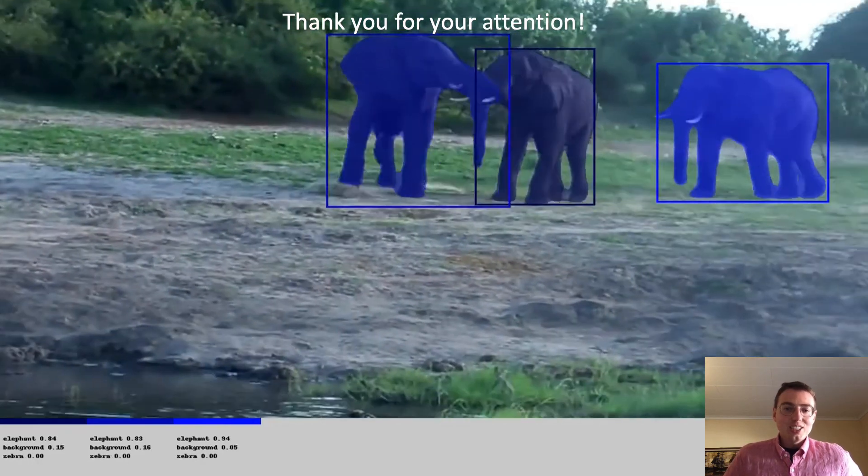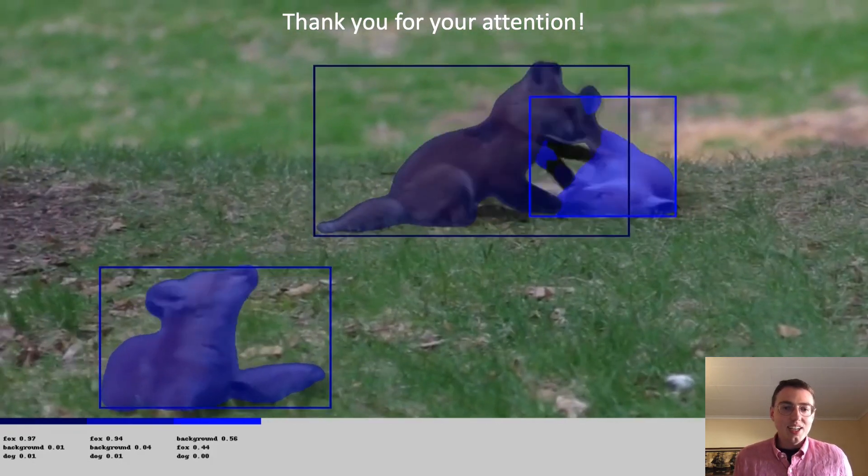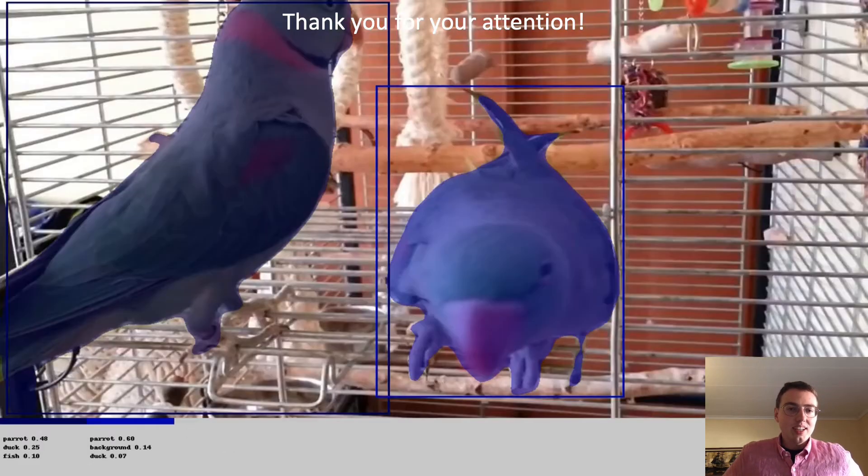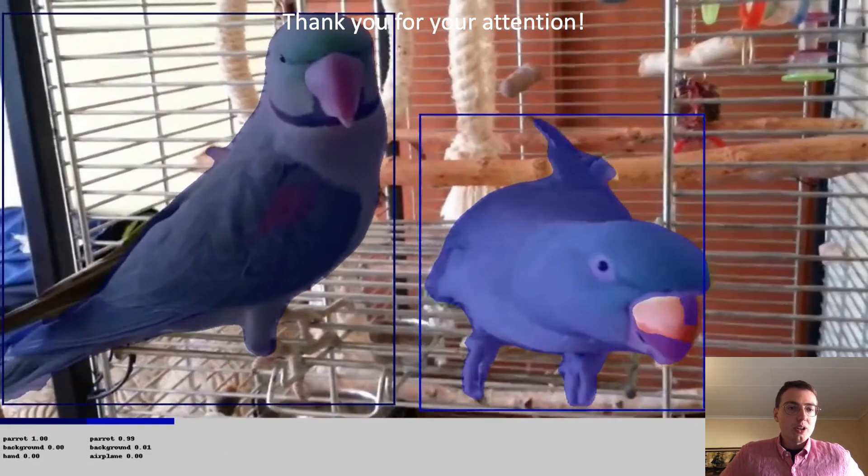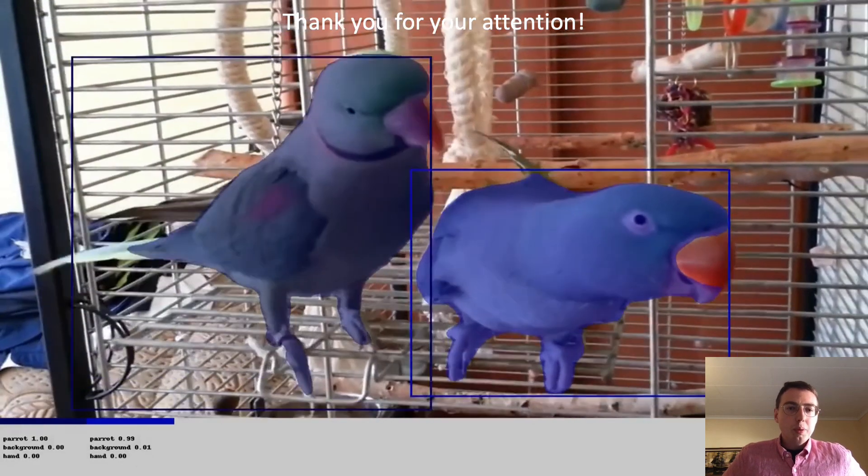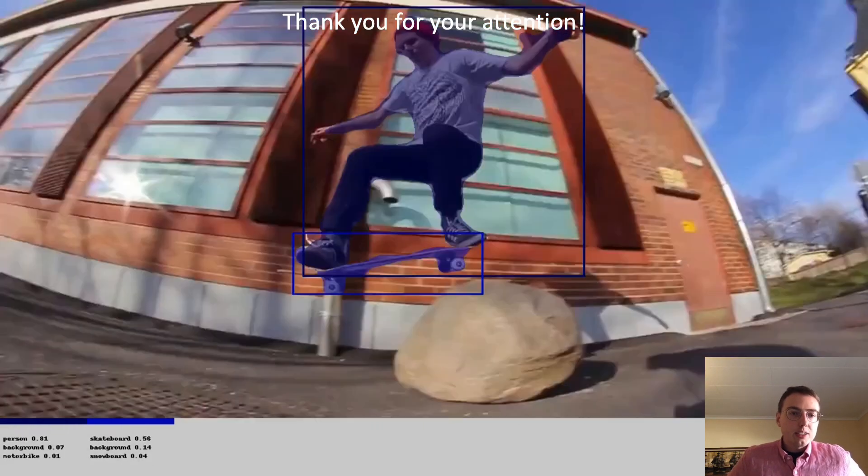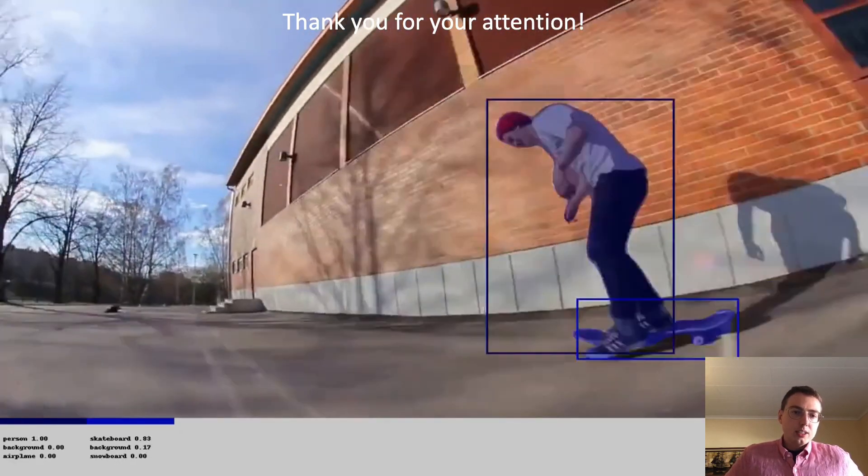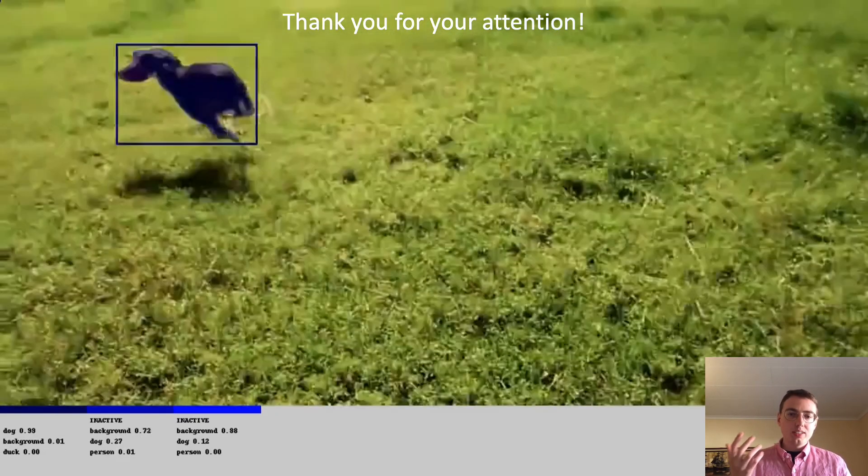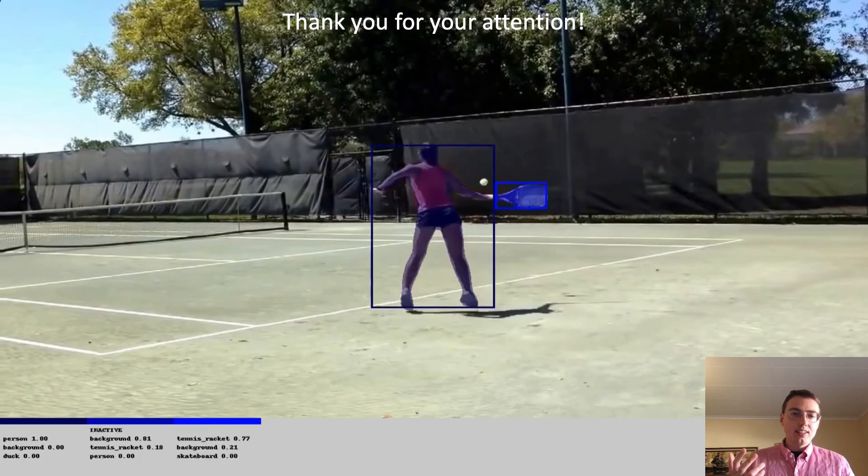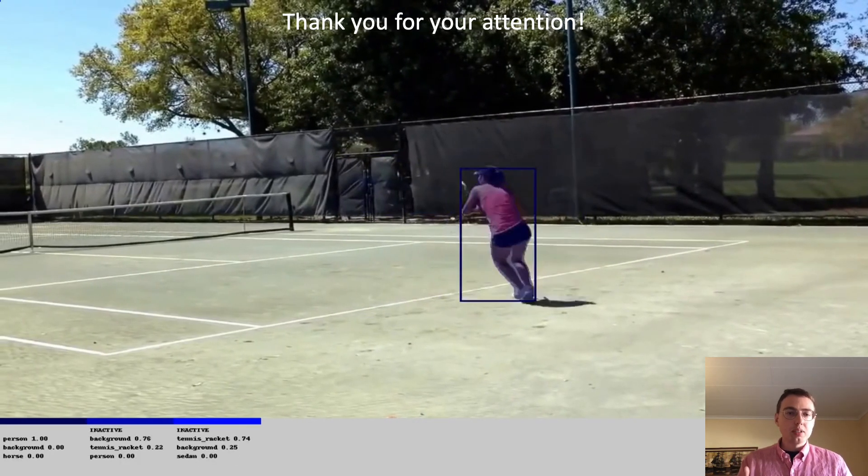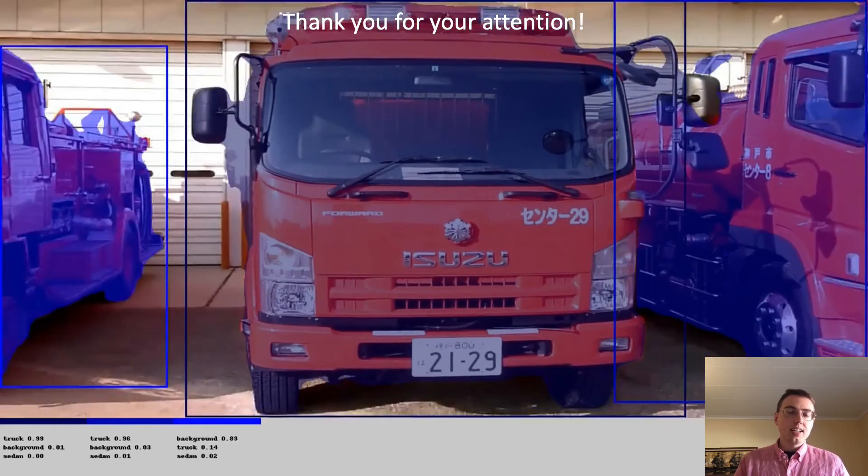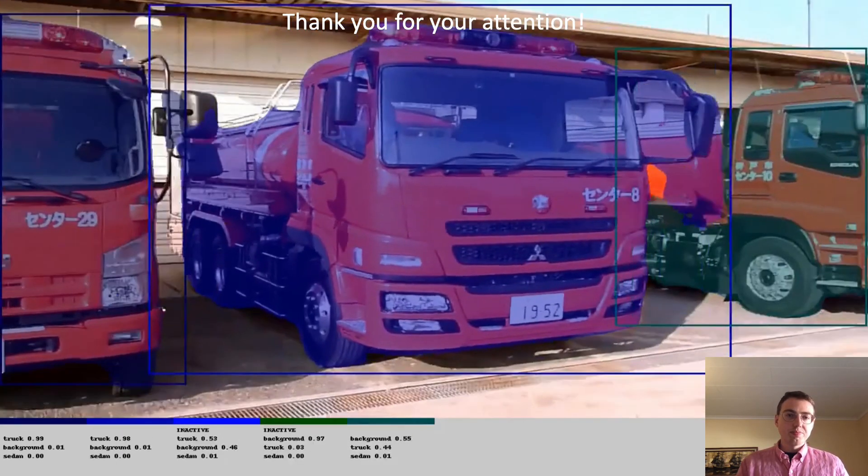Thanks for listening. I thought I'll end with a video of our approach performing on the YouTubeVis benchmark. Typically it's performing quite well but it makes some mistakes from time to time. Especially it tends to create tracks that are false positives. Quite often it quickly downweights them, but sometimes like here for instance we have an issue where we have two tracks tracking the tennis racket. Thank you.